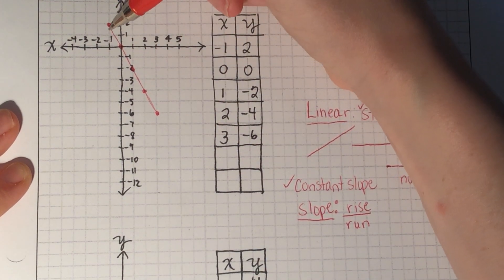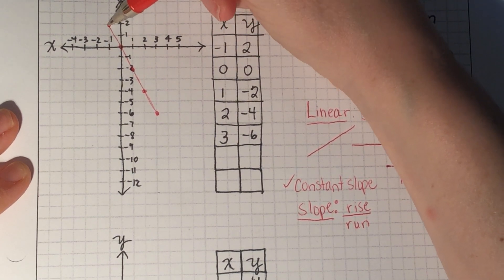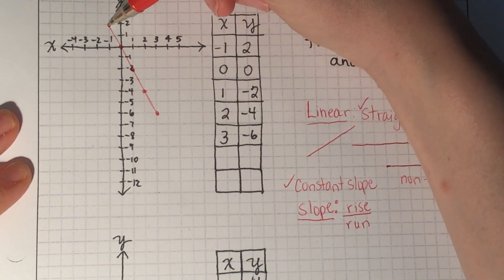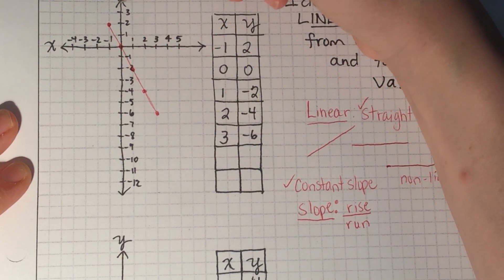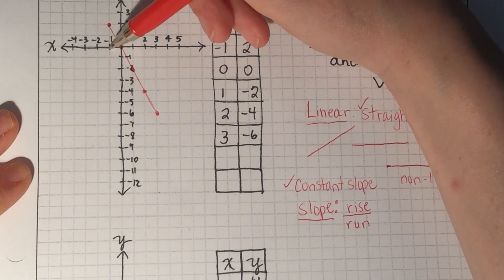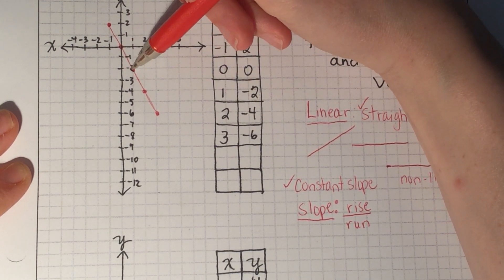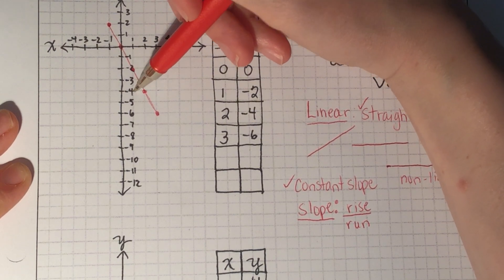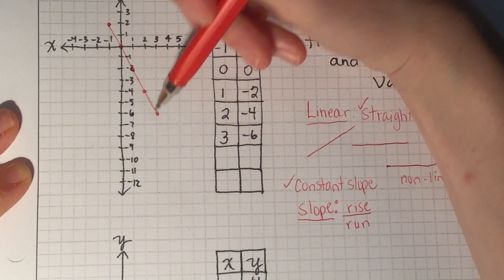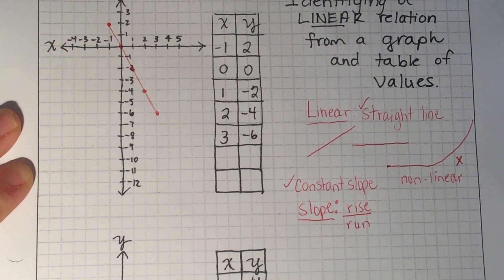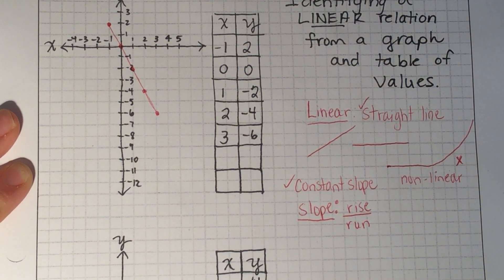It's how much I change going up and down over how much I change going left and right. If this is a constant slope, from each point we're going to have the same ratio of rise to run. So I have down two, over one — that takes me to my next point. Down two, over one — I'm at my next point. Down two, over one again. So you can see the slope remains constant; the rise over run stays the same from point to point.